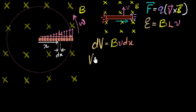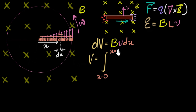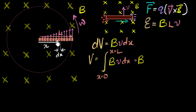To get the total potential difference, we integrate: from x = 0 to x = L of B times V times dx. B is constant everywhere so it comes out of the integral. However, velocity V is not constant — the whole reason we're integrating is because the speed varies along the rod. So V stays inside the integral, and I need to find an expression for V in terms of x.